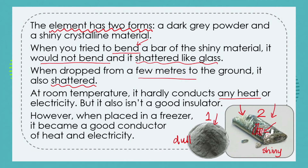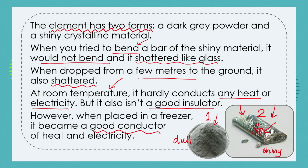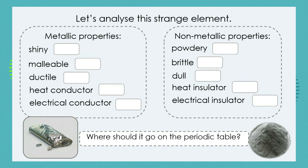We know that metals are good conductors of heat and electricity while non-metals are poor conductors or insulators. So we try the conduction experiment at room temperature and find it is not a good conductor — but it's also not a good insulator. Then we place a chunk of the element in the freezer, and when we take it out very cold, it suddenly becomes a good conductor of heat and electricity. This is a very strange substance.